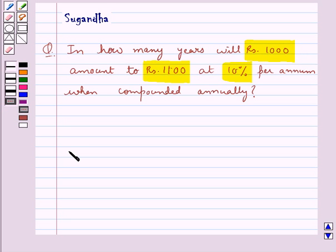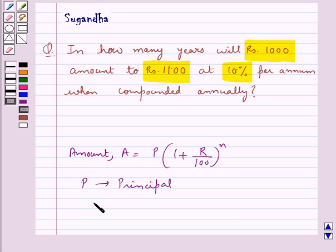Let's recall the formula for the amount: A is equal to P into 1 plus R upon 100 whole to the power N, where P is the principal, R is the rate of interest, and N is the time.